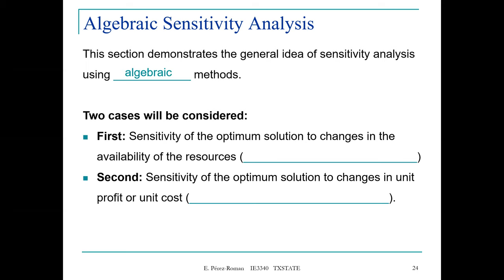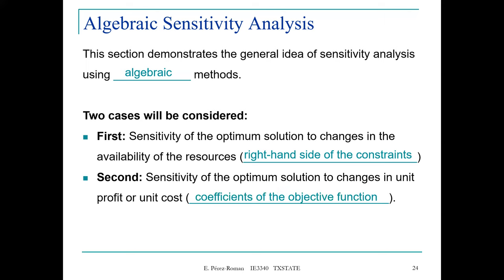Two cases will be considered. The first one is the sensitivity of the optimal solution to changes in the availability of the resources, or the right-hand side of the constraints. The second is the sensitivity of the optimal solution to changes in unit profit or unit cost — meaning the coefficients of the objective function.